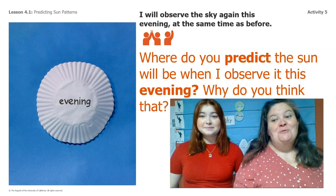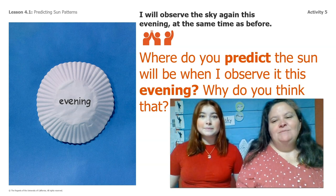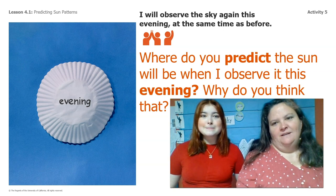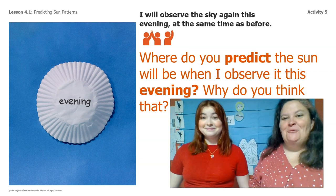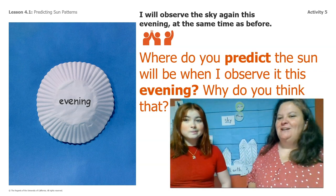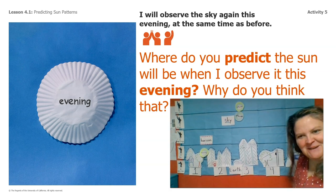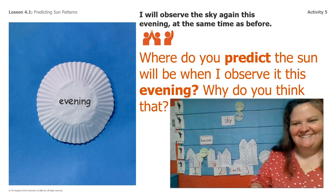We have one more prediction to make. Tonight I'm going to go back outside at the same time as I made my last evening observation and observe the sun. Where do you predict the sun will be when I observe it this evening, and why do you think that? Go ahead and point to the screen, and make sure you tell me why you made that choice.